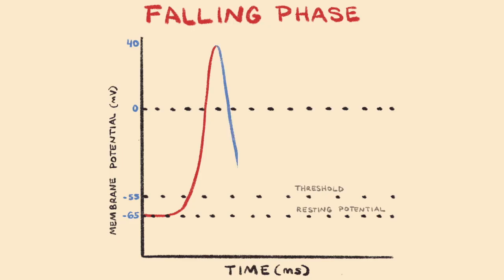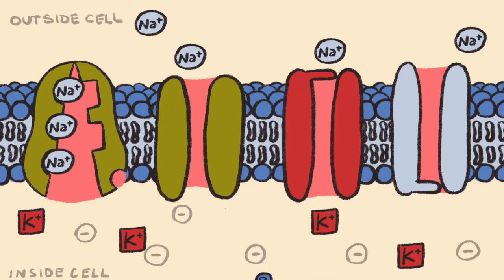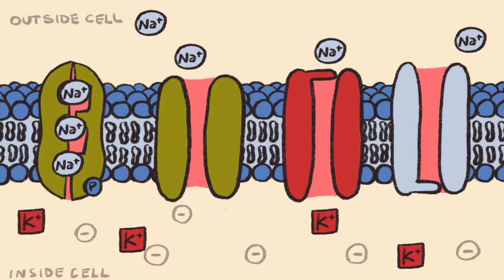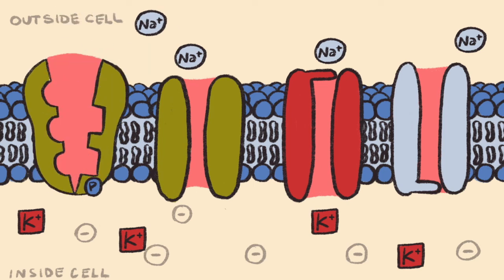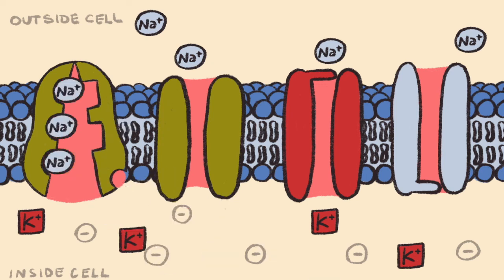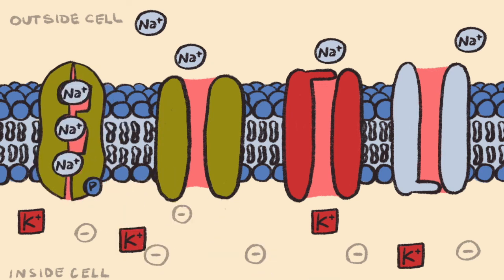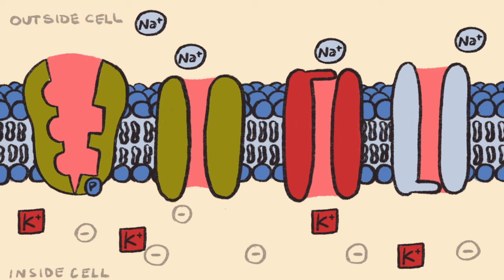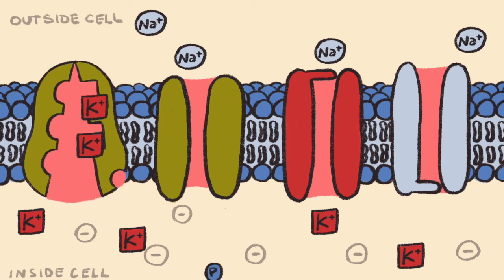Once the voltage-gated potassium channels finally close and potassium ions are no longer leaving the neuron, the sodium-potassium ATPase pumps and potassium leak channels start to take larger control and begin to move the neuron back to resting membrane potential. As usual, the sodium-potassium ATPase pumps use energy to move three sodium ions out of the neuron while moving two potassium ions into the neuron, and potassium leak channels allow potassium ions to leak back out so the pumps can cycle again. Eventually, the neuron membrane potential is restored back to negative 65 millivolts.